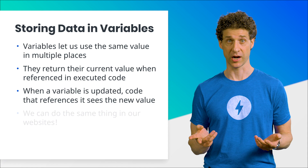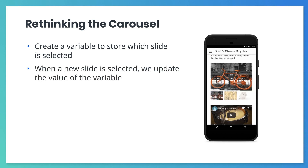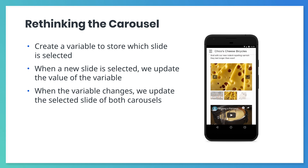We can do a similar thing on our websites. We can store information in variables and reference those variables throughout our pages. When those variables are updated, the places where they are referenced will automatically update with the new values. For our carousel example, we can create a variable containing the currently selected slide. Whenever a user changes the slide on one of the carousels, we update that variable. We'll rework each carousel so its selected slide always matches the current value of that variable. If we add additional components that also need to know about the currently selected slide, they simply need to reference the variable we created.